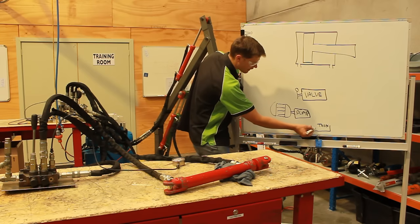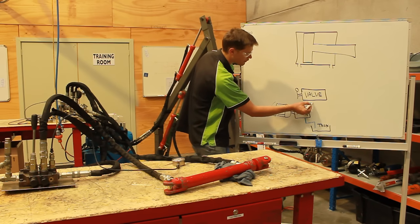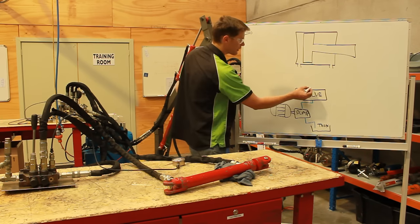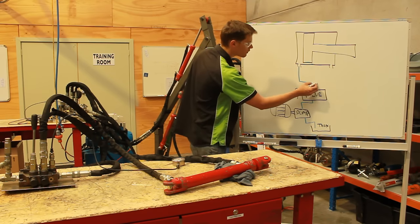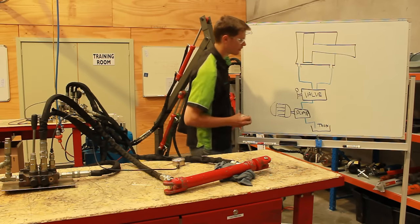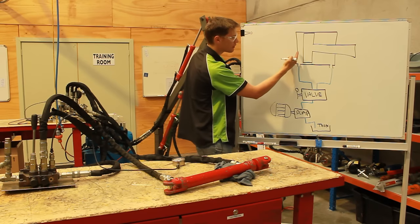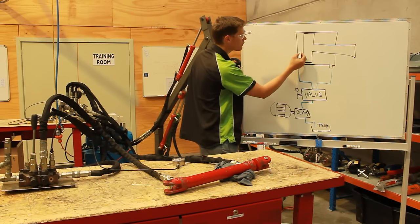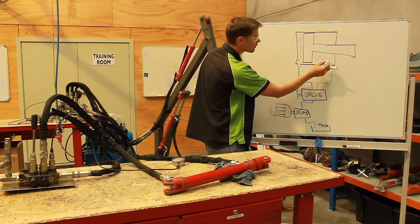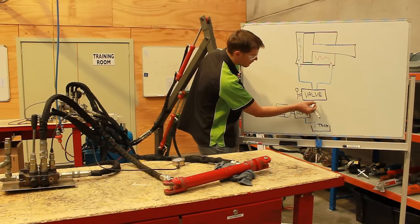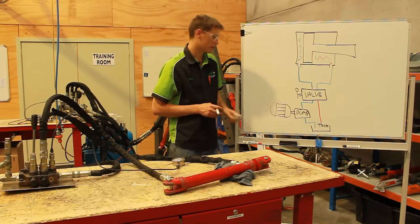Our tank has a suction line which comes into a hydraulic pump. The pump's oil then goes up and through a valve. The valve then directs oil either to the extension end of the cylinder or to the retraction end. If I'm feeding oil from the pump into the back end, it's very important that I get the oil that's in the front back out again. So I have a tank port on my valve which drops straight back into the hydraulic tank.